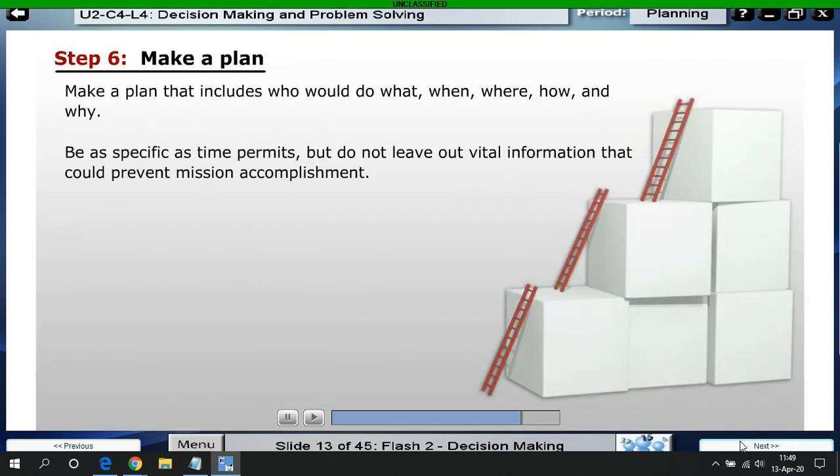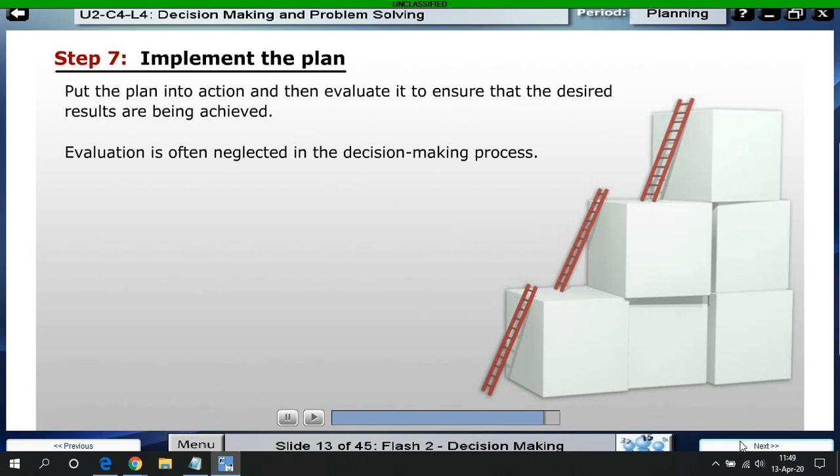Make a plan. Ensure that you specify the what, when, where, how, and why for all personnel or elements under your authority. Finally, include contingencies in your plan that address possible unexpected situations or actions. Develop these contingencies based on the assumptions made when you identified the problem and gathered available information. Implement the plan. After the decision and plan are made, it is time to act. In this final step, you must put the plan into action and then evaluate it to ensure that the desired results are being achieved. Evaluation is often a neglected step in the decision-making process.